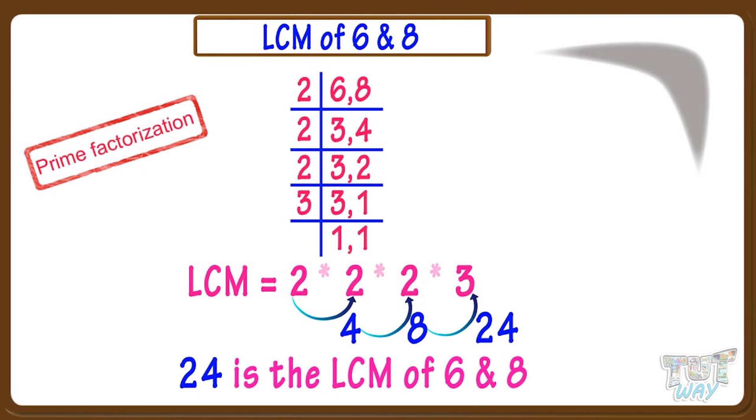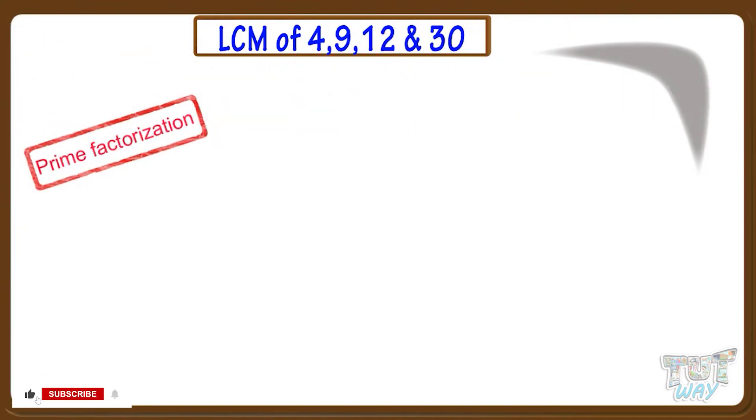Now let's take another example. We have to find the LCM of 4, 12, 9, 30. So first we do the prime factorization of these numbers.